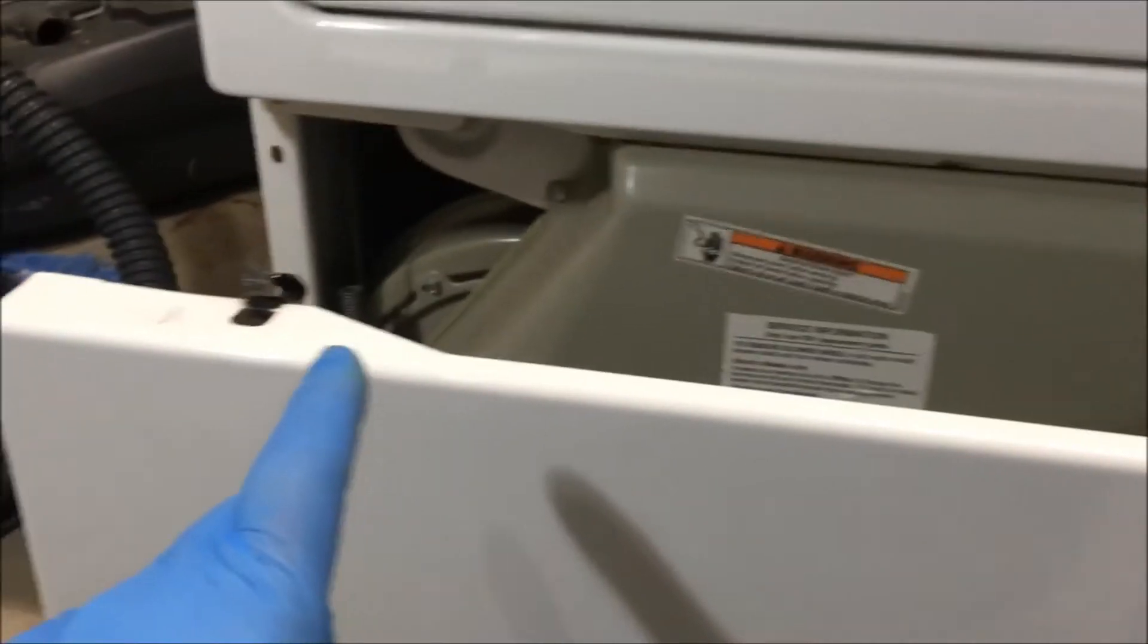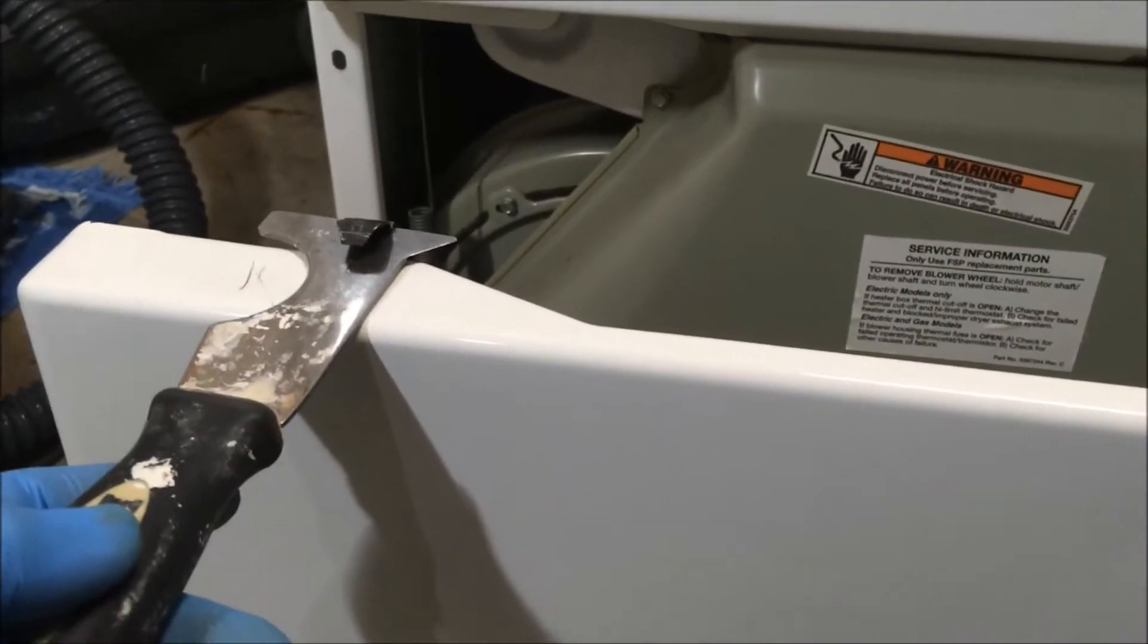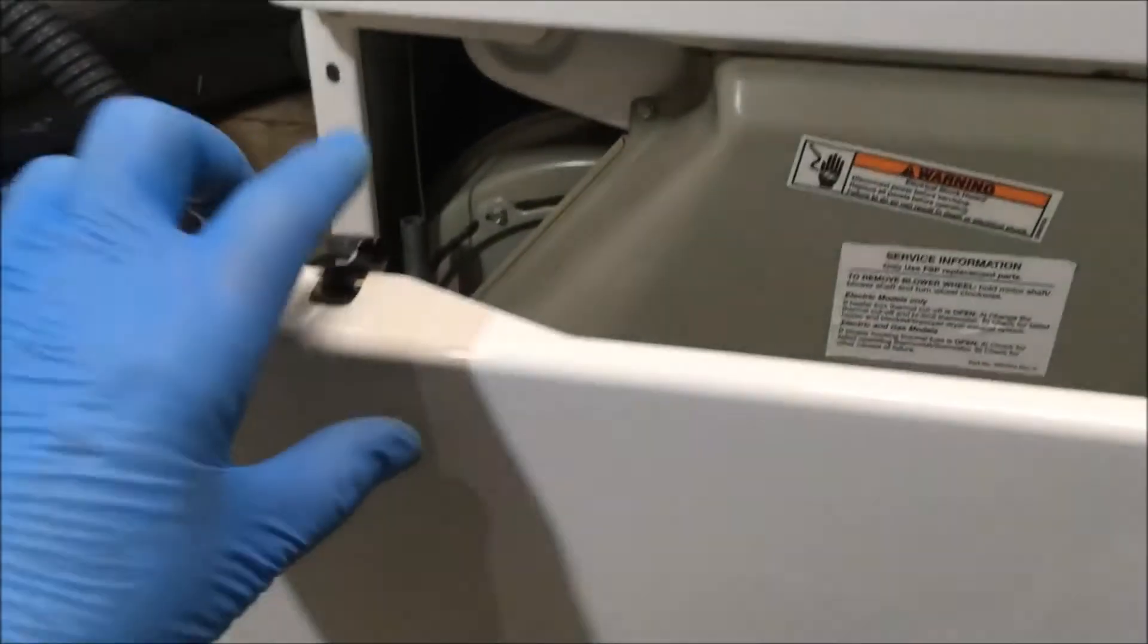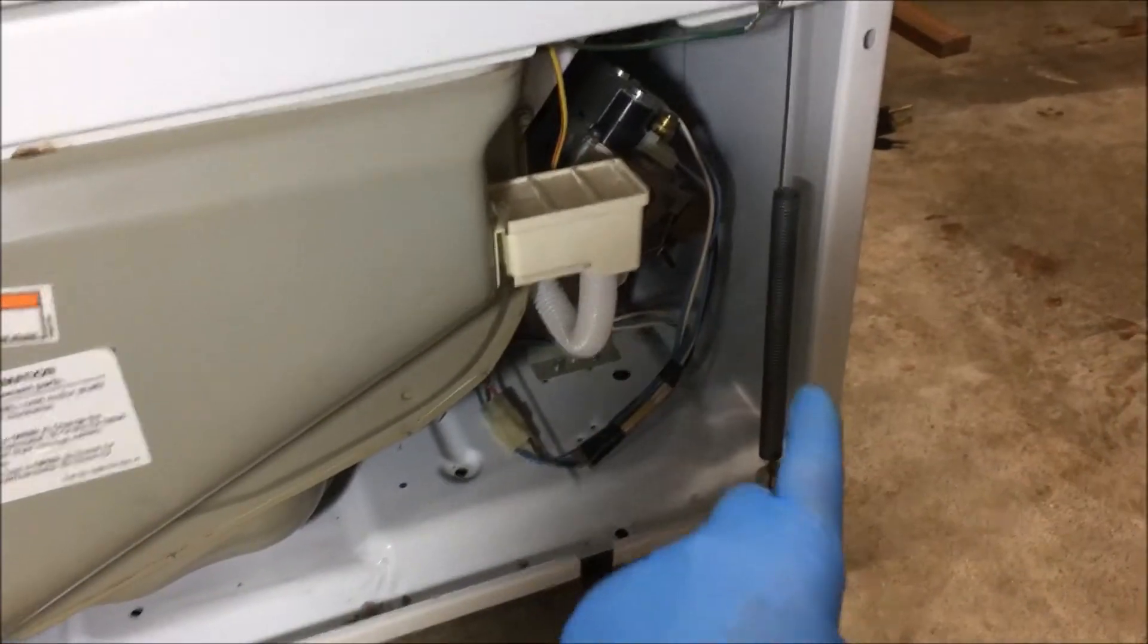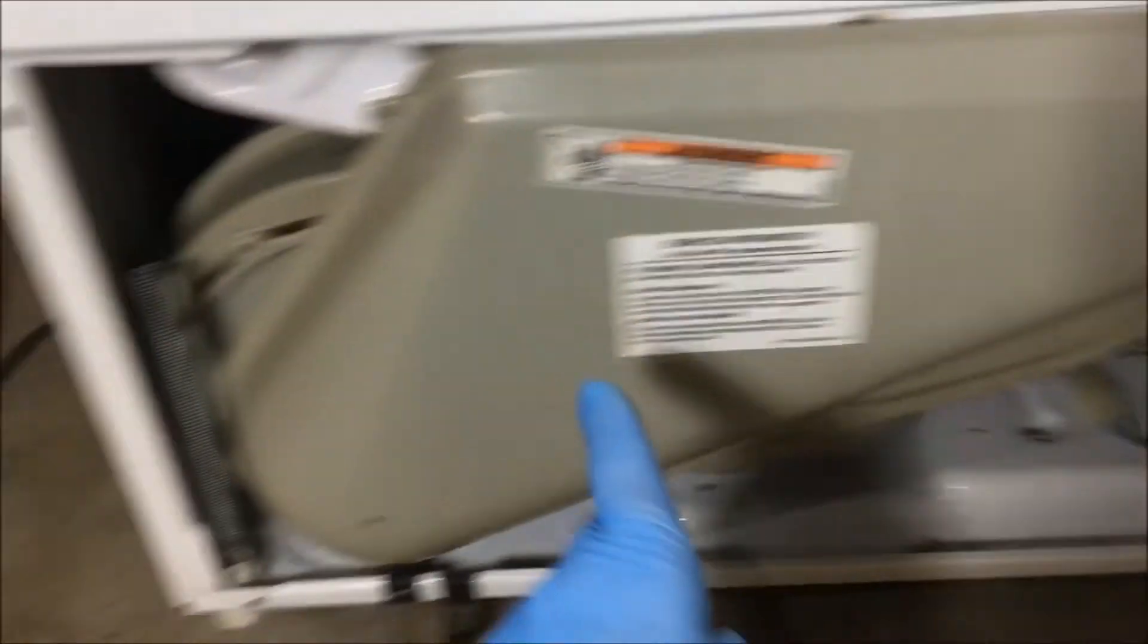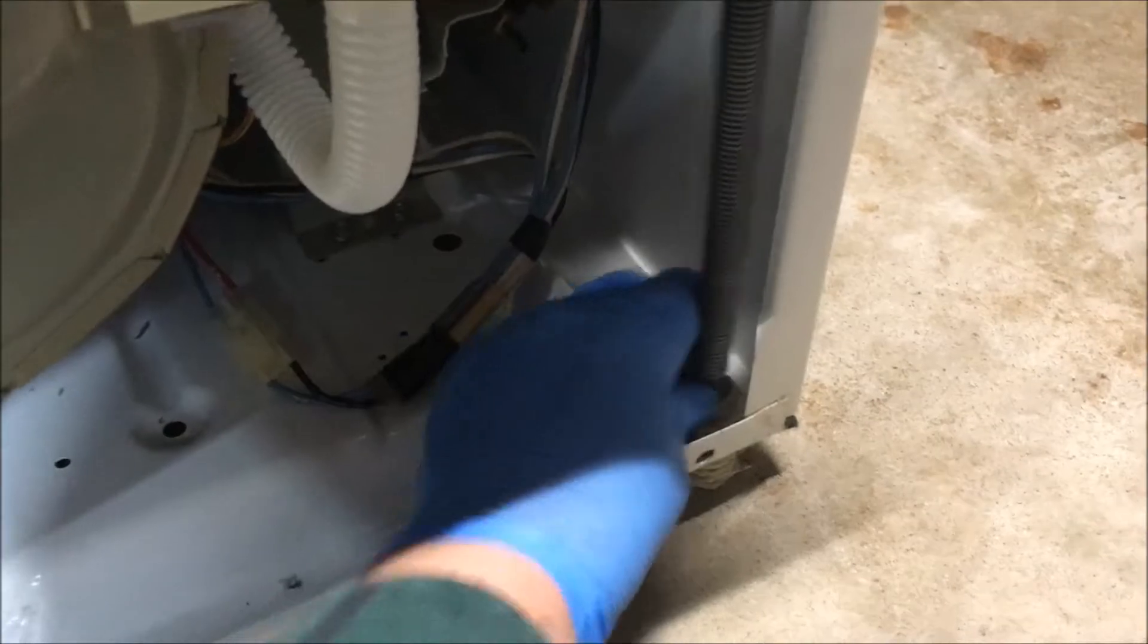These are the two clips you're pushing with either a five in one tool or a screwdriver to release the tension on them or spring on them. Now you remove the two door springs, one there and one there. Just pull down on the spring.